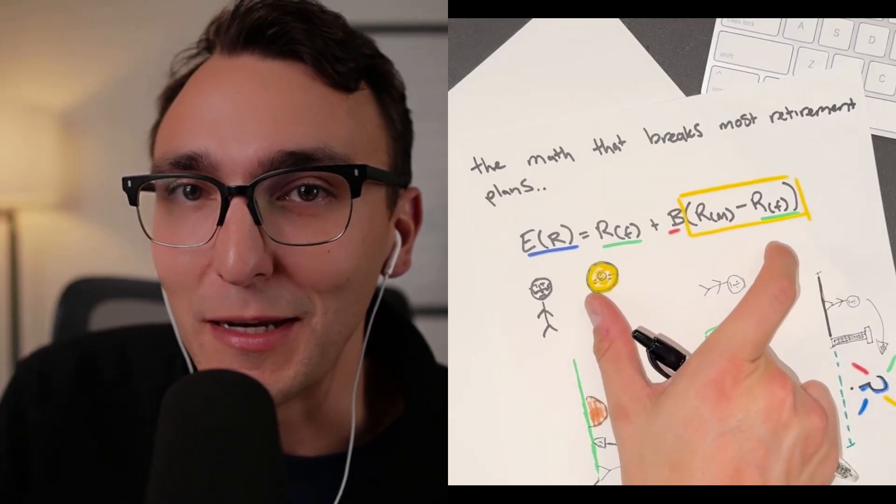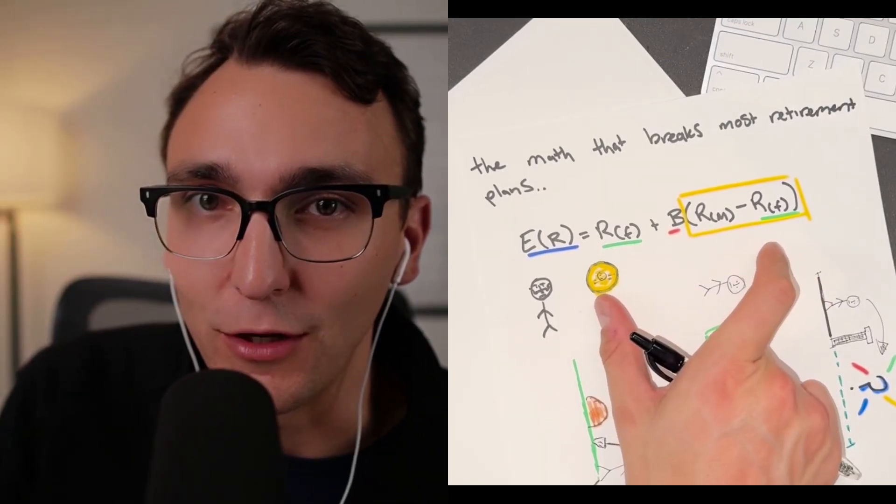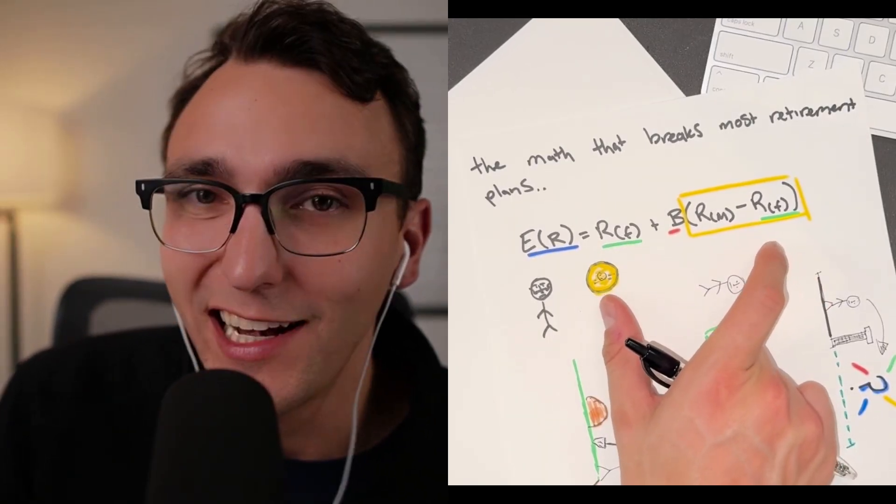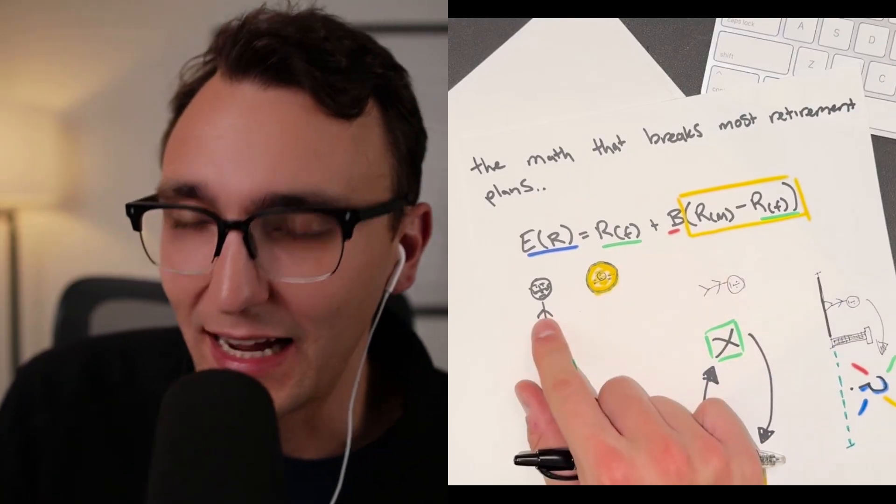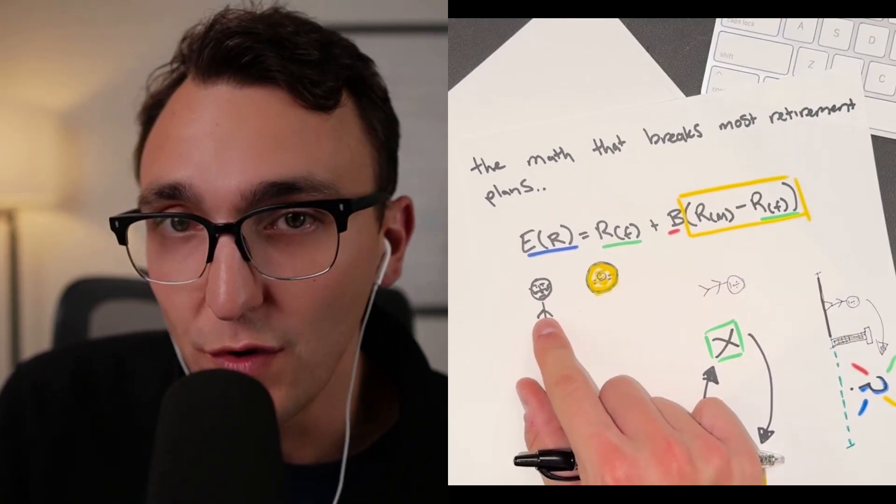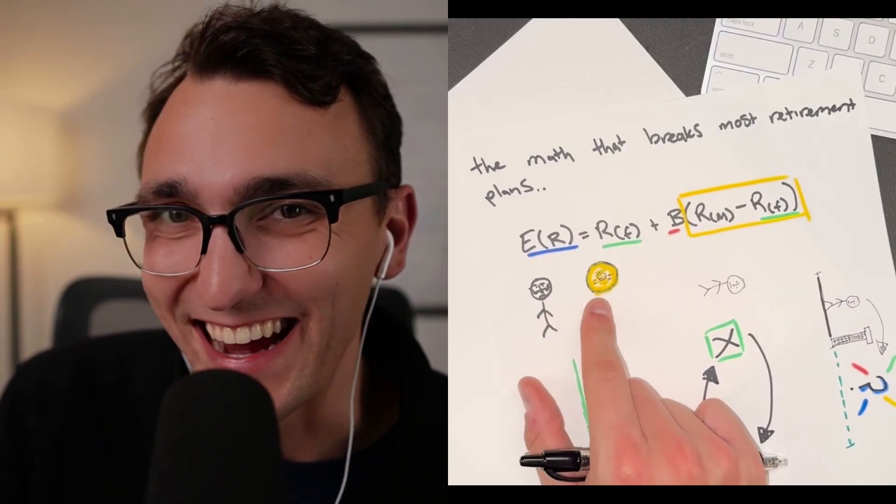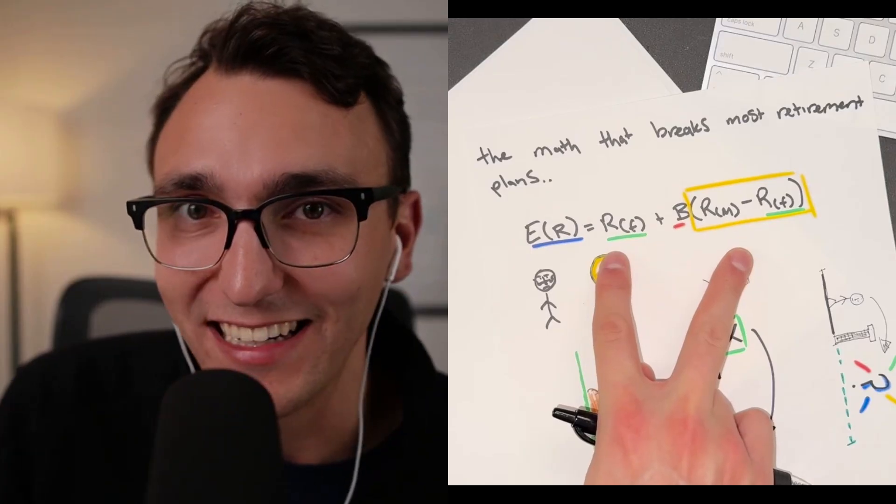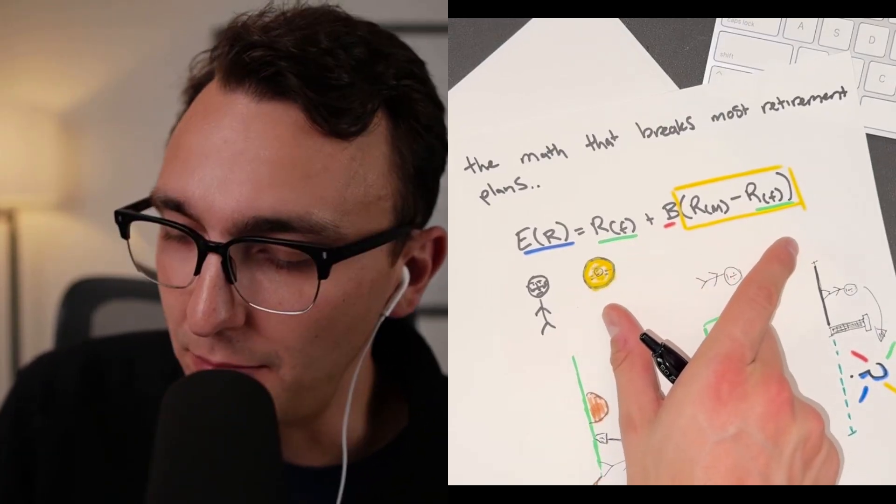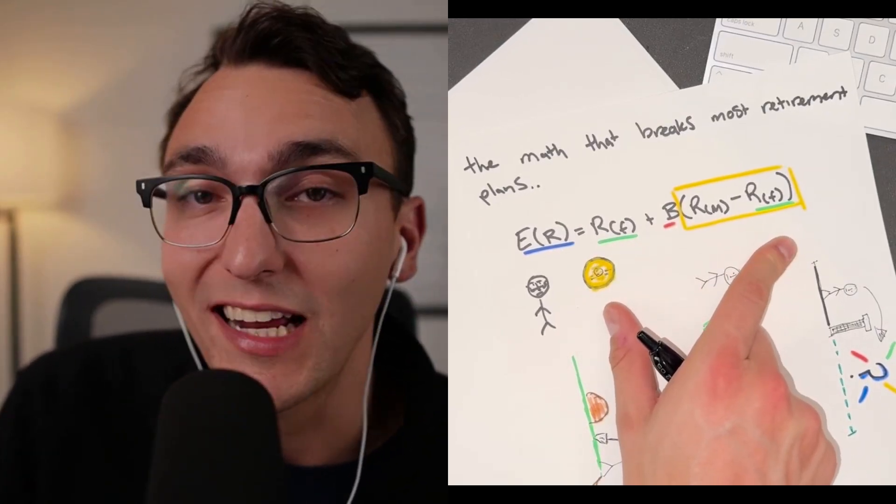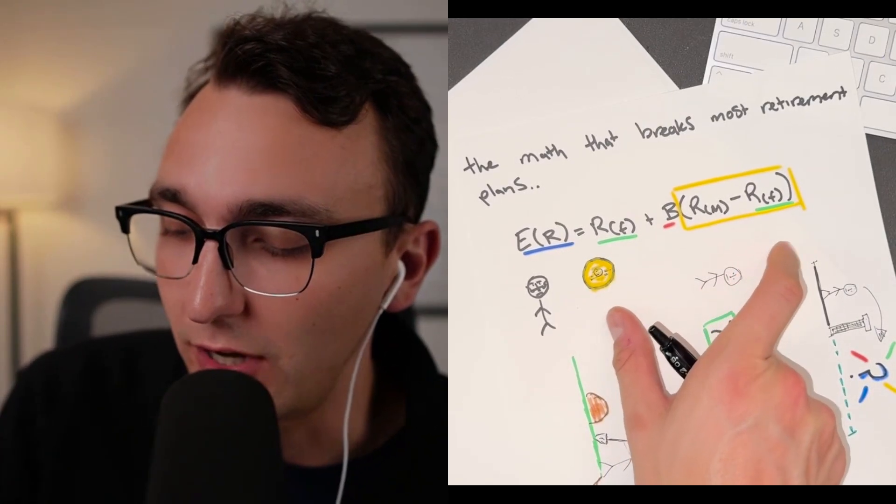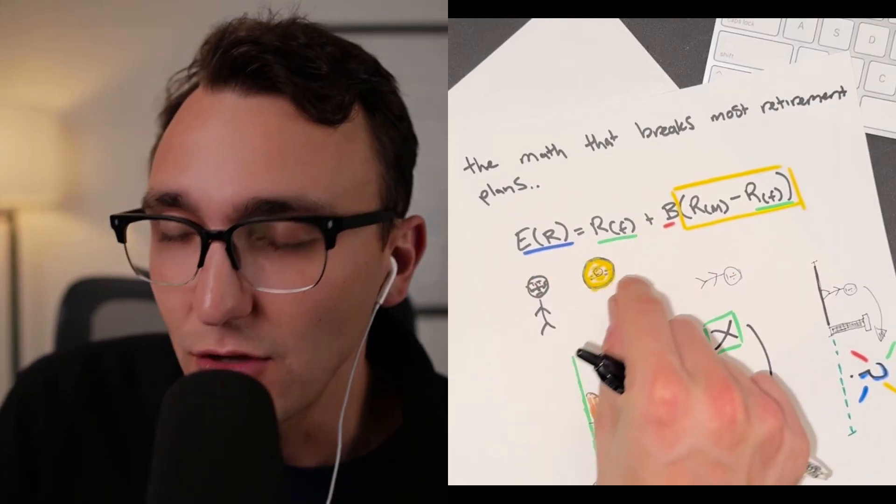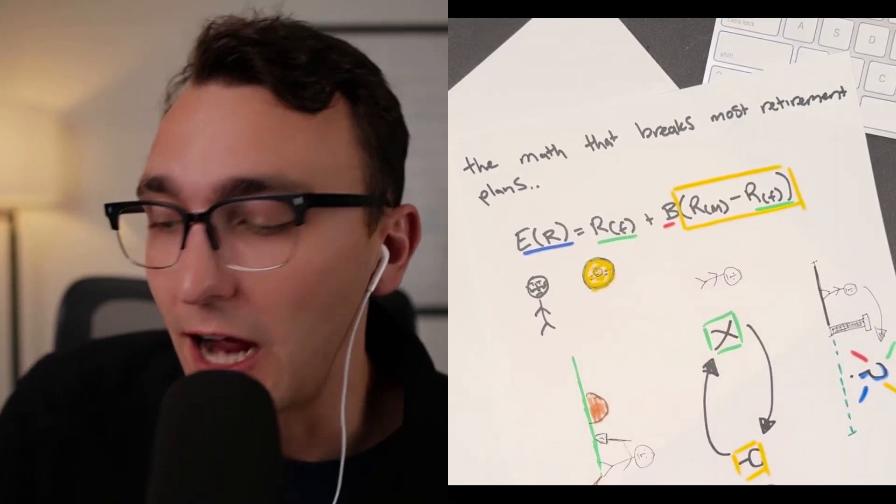This is the Capital Asset Pricing Model, or CAPM for all you finance people out there. It was created in the 1950s by this guy, William Sharpe, who eventually won a Nobel Prize in the 90s for that. It looks pretty complicated, but it isn't. But today we're not going to use it to price assets. We're actually going to look at the components of it and try and use it to make sense of retirement.